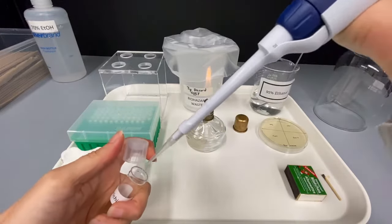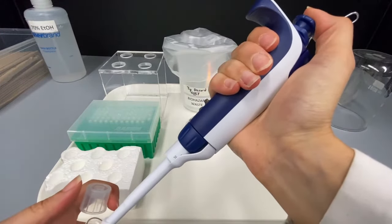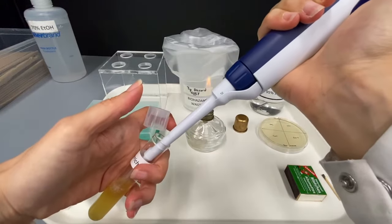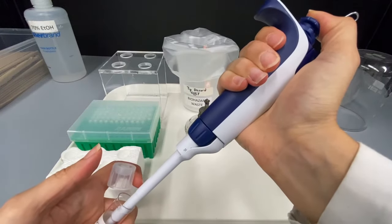Remove the cap, push the pipette plunger down to the first stop, put the tip into the solution and slowly release the plunger to pick up the liquid.